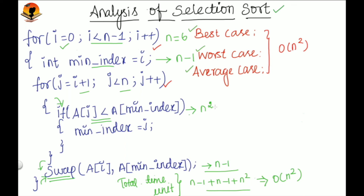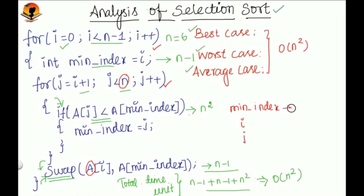Now, what about space complexity? As mentioned earlier, priori analysis assumes every variable takes one unit of memory. Here we have variables min_index, i, and j, in addition to the input variables n and array. Each variable takes one unit of memory, and the total memory unit is 3, which is constant. So the space complexity for the selection sort algorithm is O(1).